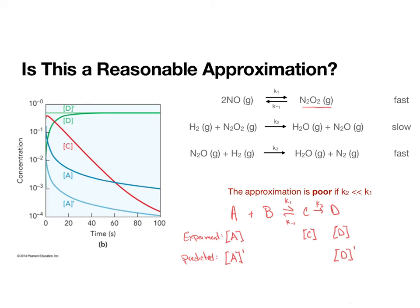And we can see that with our experiment. Remember, the experiment is this top one, and the bottom is predicted. We can see that with our reactant, A, and we can see that difference with our product, D. What we are really seeing is that there is a significant difference between the predicted concentrations and the experimental concentrations. And this tells us that when K2 is much less than K1, the steady state approximation is not a valid approximation. And so we have to be careful when we apply this.